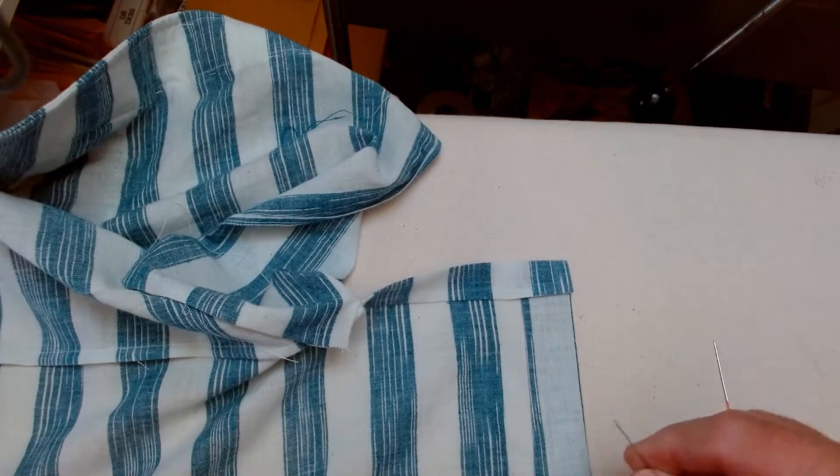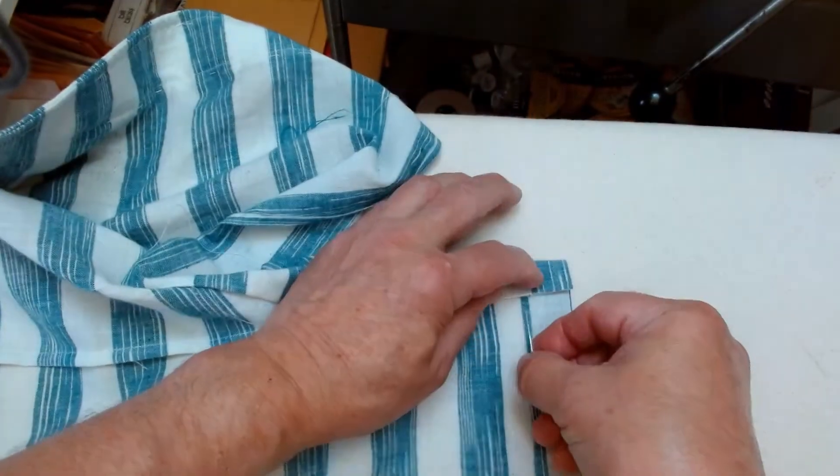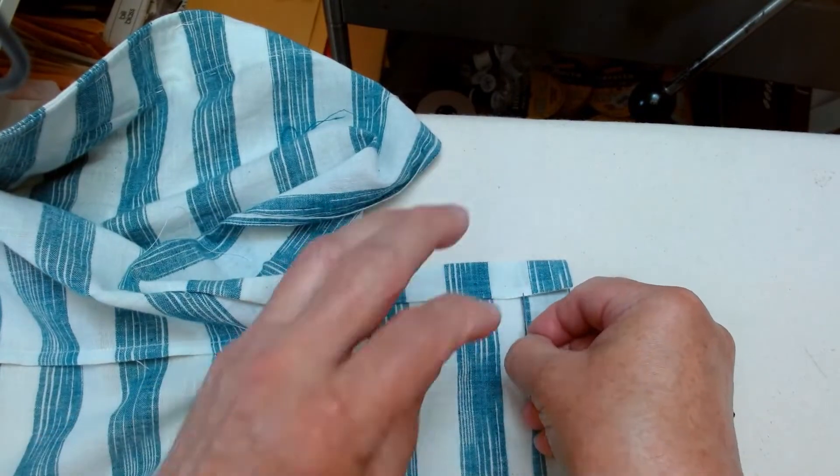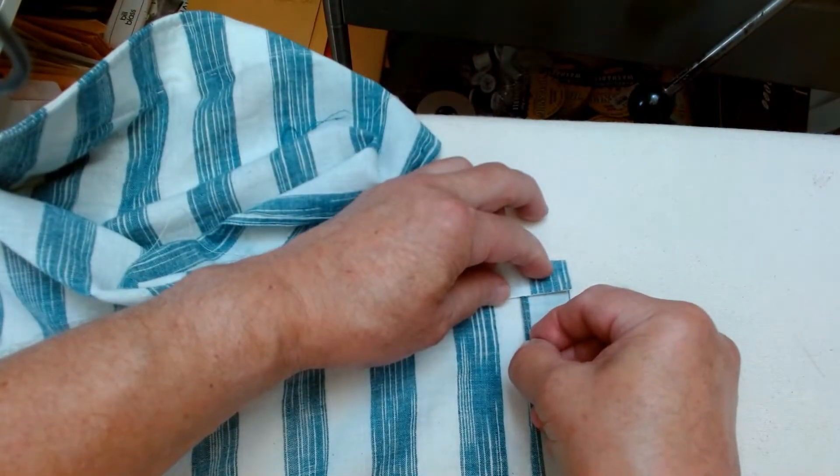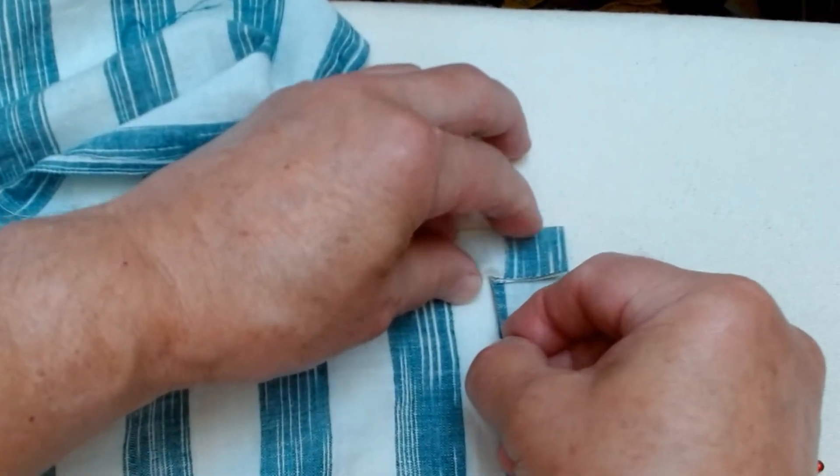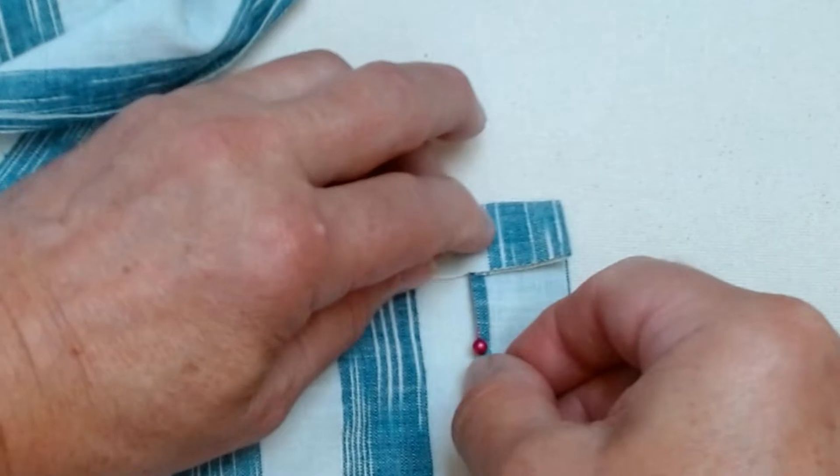In the next step, you just need two pins. The first pin you will place along the line of the hem and you're going to pin into the fold of the vent, just like that.